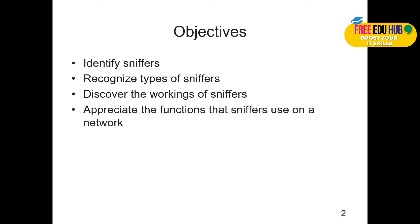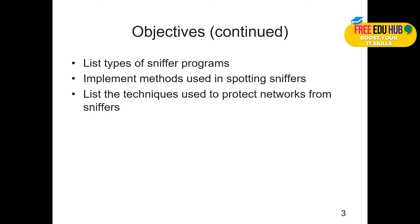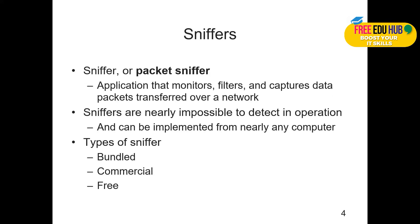The objectives of this chapter are to identify sniffers, recognize types of sniffers, discover the working of sniffers, and appreciate the functions that sniffers use on a network. We'll try to understand how they are actually working in a network environment, list types of sniffer programs, implement methods used in spotting sniffers, and list the techniques used to protect the network from sniffers.